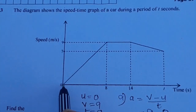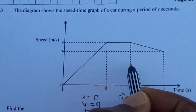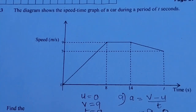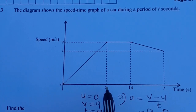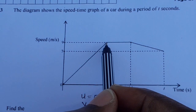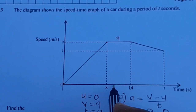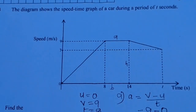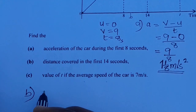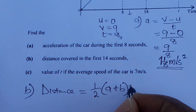When you look at the shape formed when the car moved from 0 up to where 14 is, this shape is a trapezium. To find the distance, we are going to use the formula for the area of a trapezium. From here to here is A, from here to there is B, and from here to there is the height H.